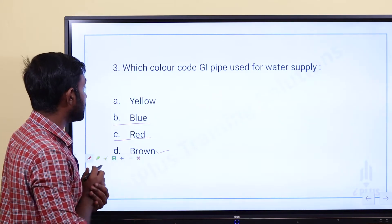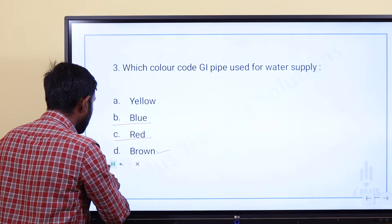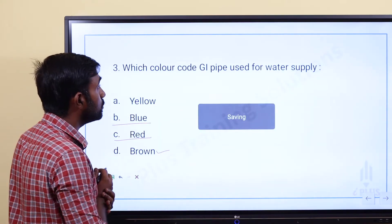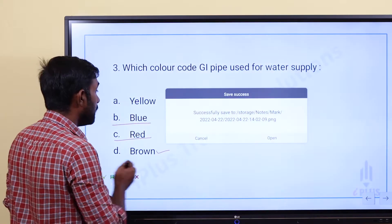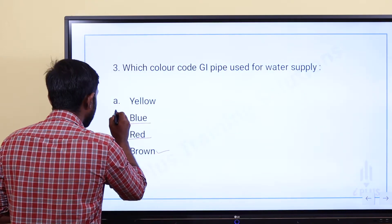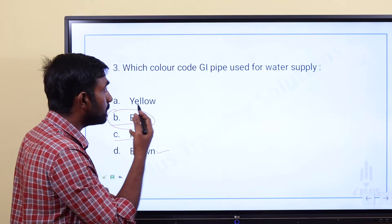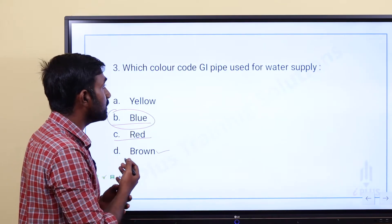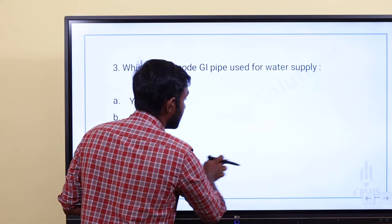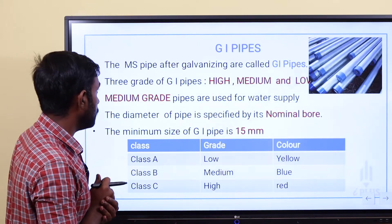In this case, the color is blue. If we use the G.I. pipe for the water supply system, the pipe color is blue. Blue color pipes are used in the water supply system.